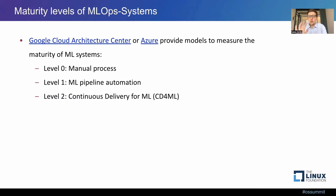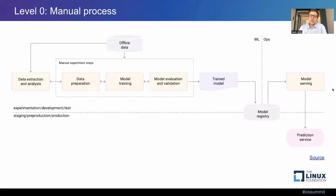Let's start with level zero — the manual process — using our conversion prediction example. The organization hires data scientists to build such a model. They use existing customer interaction data, do exploratory data analysis, prepare an initial dataset and baseline model, and evaluate it using Jupyter notebooks. Then they iterate — changing the dataset by including more features, training a different kind of model, evaluating again — until they have a model they feel solves the task.